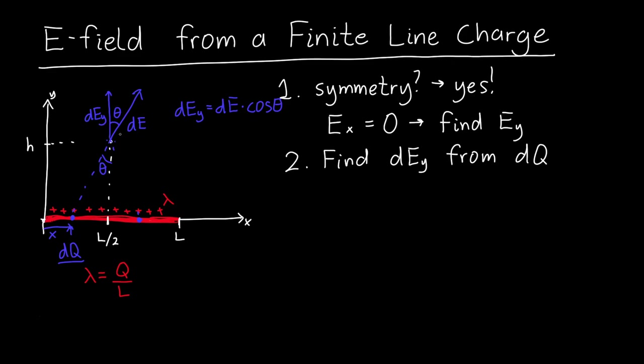But because this theta here is the same as this theta, we can figure out what cosine of theta is in terms of our variable X, and L, and H. So in particular, cosine of theta is just equal to the adjacent side divided by the hypotenuse. And here, the adjacent side is just H. So this is equal to H divided by our hypotenuse, which is this thing here. I'll call this R. So H over R.